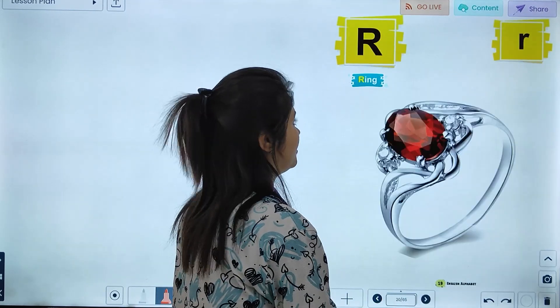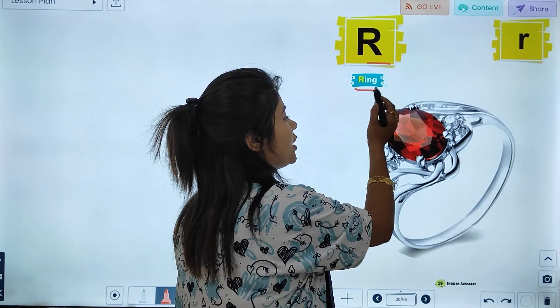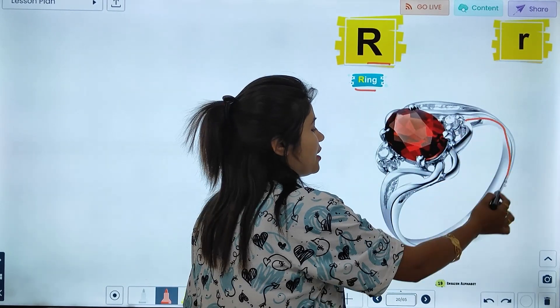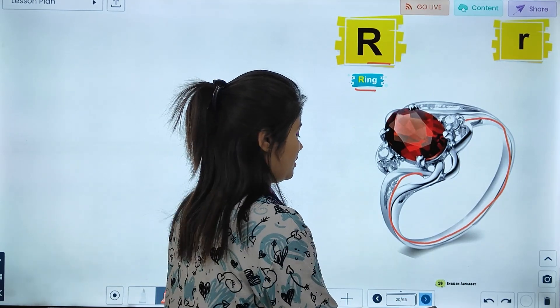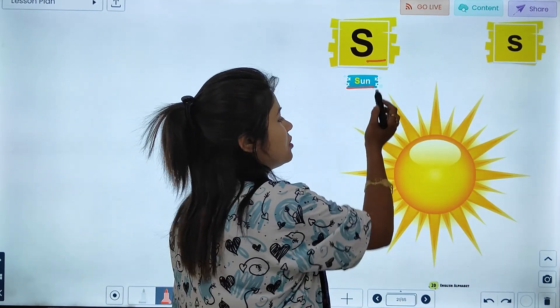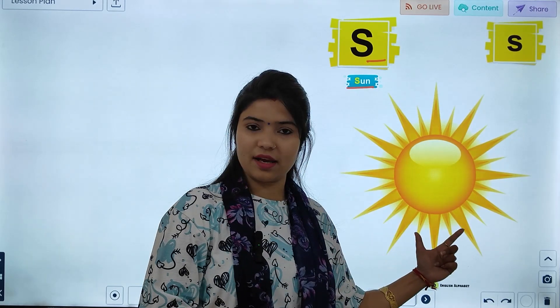Next, R. So, what picture is this? Queen's. Clear? S, S for Sun. So, what do we have? Sun.